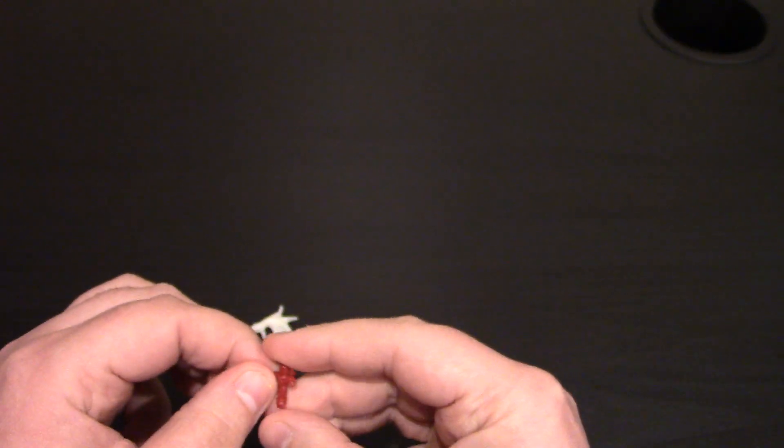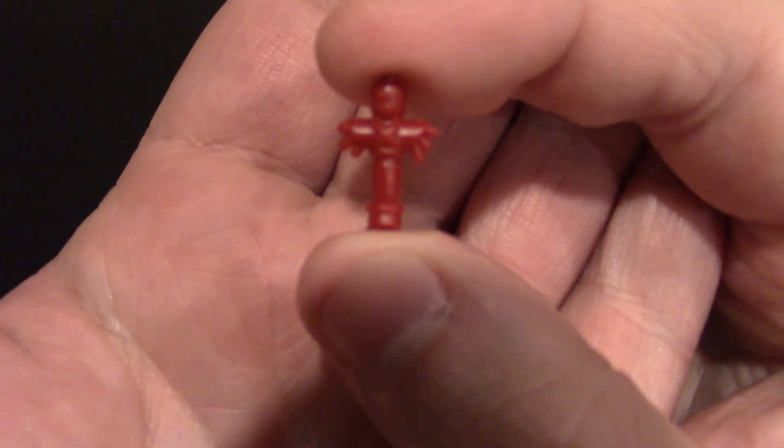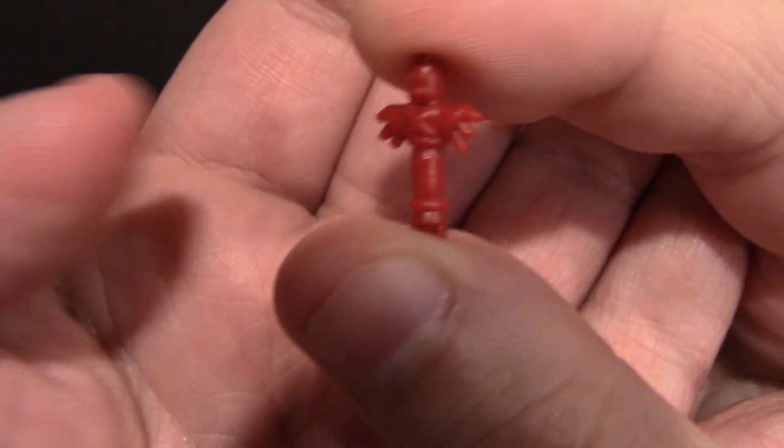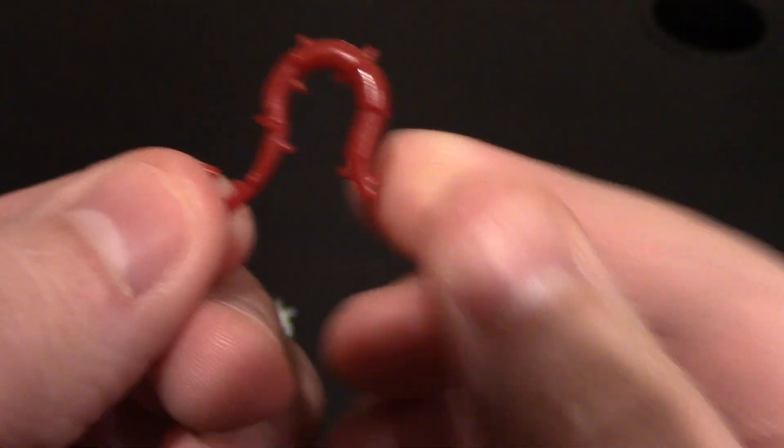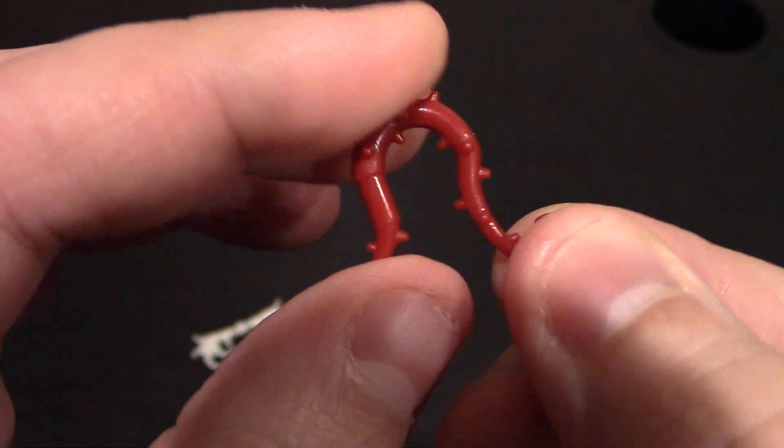We got a little voodoo doll in red. Minifigures can hold these. We got some ivy or a vine whip. Again, minifigures can hold this right here. Could make a mutant creature out of it as well. Spiky.